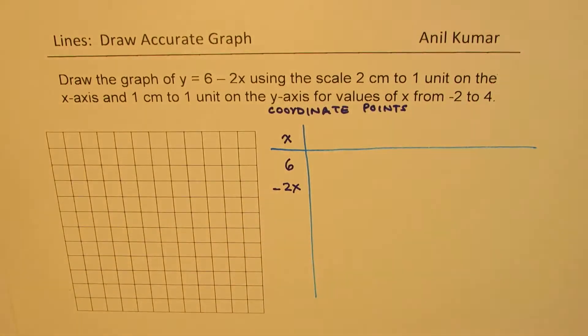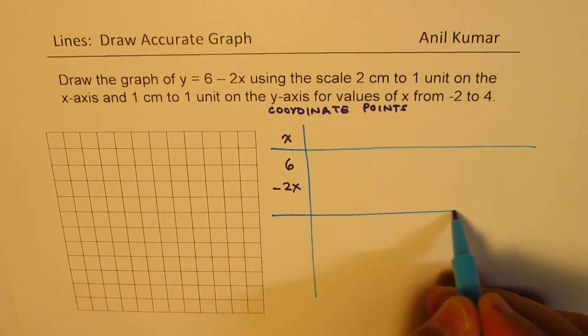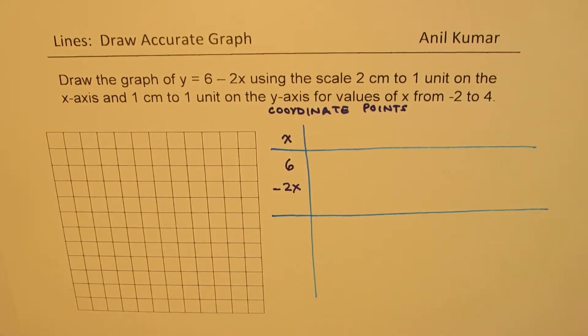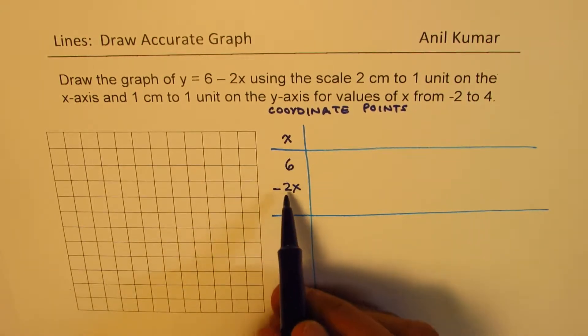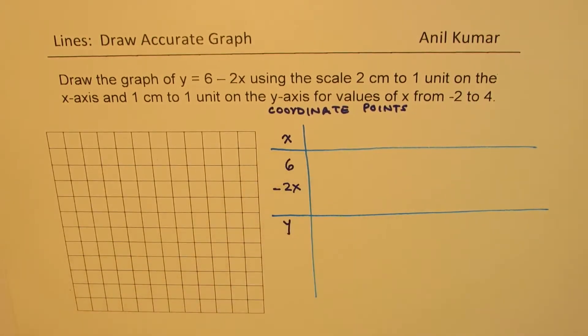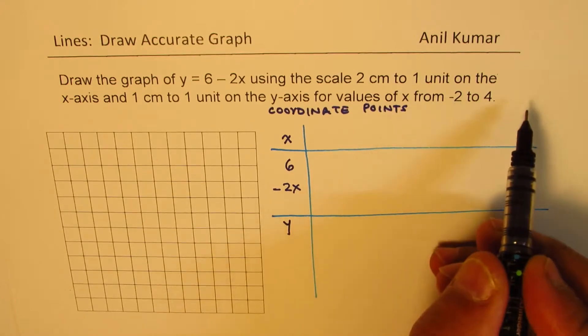So once we do that minus 2x, we get the value of y. So y will be equals to 6 minus 2x for each and every value of x.